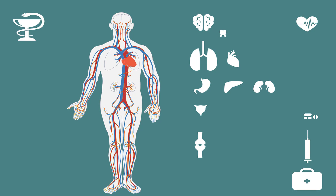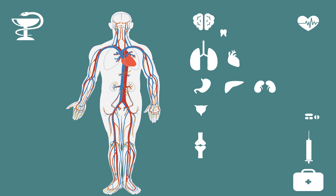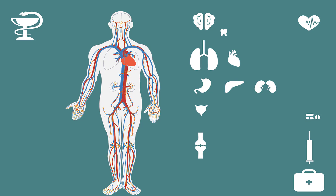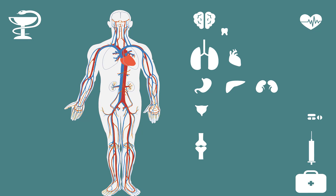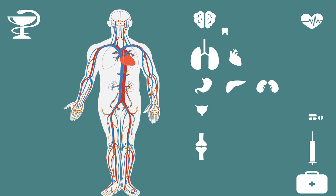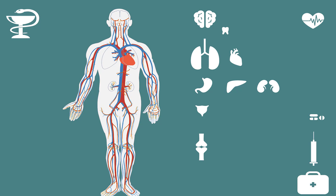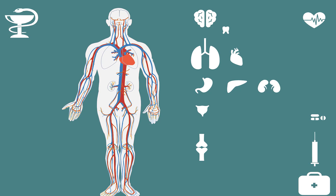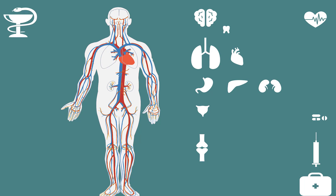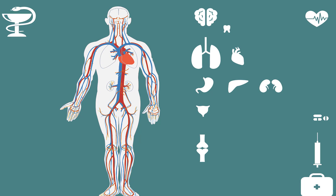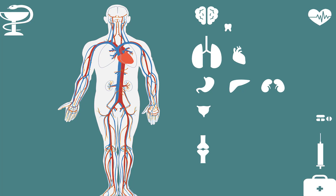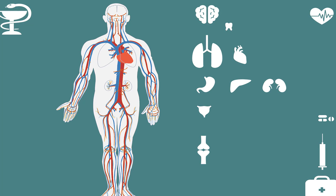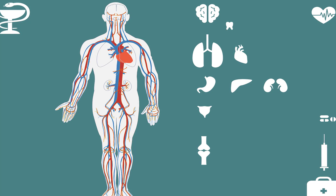If you have recurrent UTIs, your doctor may check for abnormalities or obstructions in your urinary tract. Tests for this include an ultrasound using a transducer passed over your abdomen to create images of your urinary tract organs; an intravenous pyelogram (IVP), which involves injecting a dye that travels through your urinary tract and taking an X-ray; a cystoscopy, which uses a small camera inserted through your urethra into your bladder — during which tissue may be removed to rule out bladder inflammation or cancer; and a CT scan for more detailed images of your urinary system.